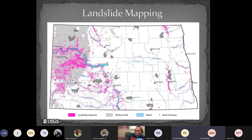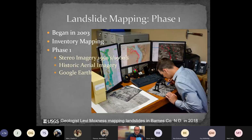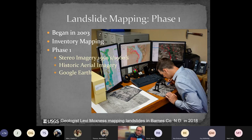We've done our mapping in three phases. Phase one began in 2003 — classic inventory mapping using stereo imagery, primarily from the 1950s and 1960s, along with historical aerial imagery and early Google Earth. You can see our geologist Levi Moxon using a stereoscope to look down at stereo pairs.